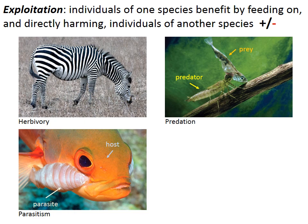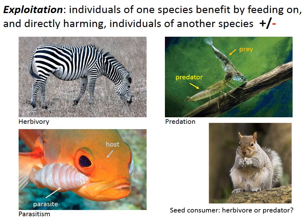Although these categories may seem clear-cut, sometimes the lines between them become blurred. For example, if a squirrel eats an acorn, the embryonic plant is killed. Is the squirrel an herbivore or a predator? Most would classify the squirrel as a predator because the seed contained a distinct genetic individual.